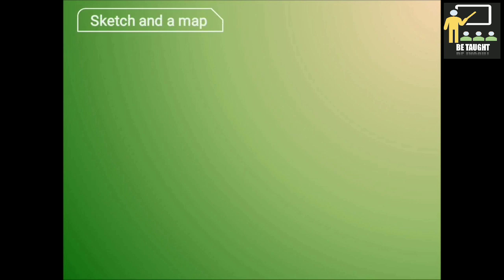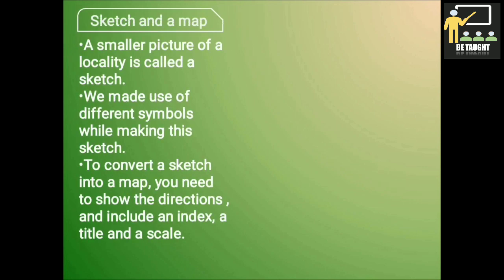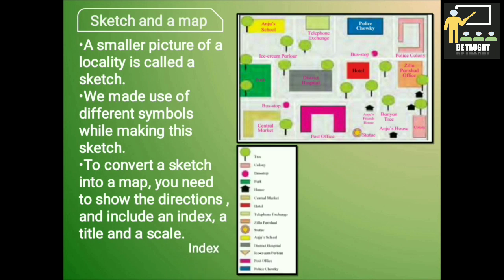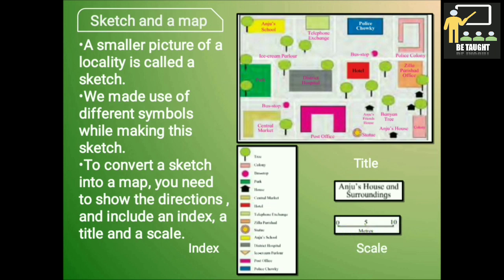A smaller picture of a locality is called a sketch. We make use of different symbols while making the sketch. To convert a sketch into a map, you need to show the directions and include an index, a title and a scale.